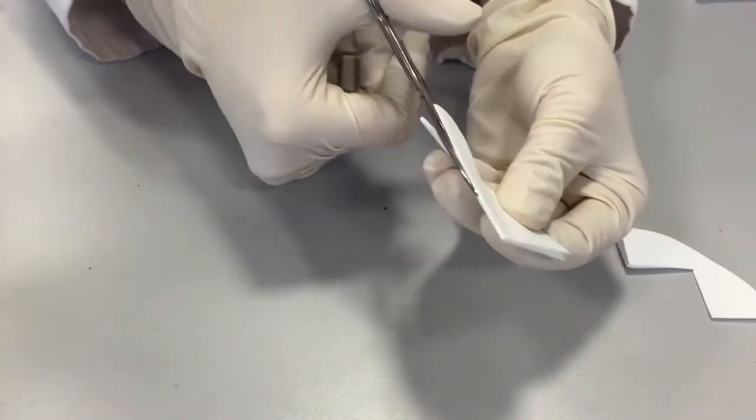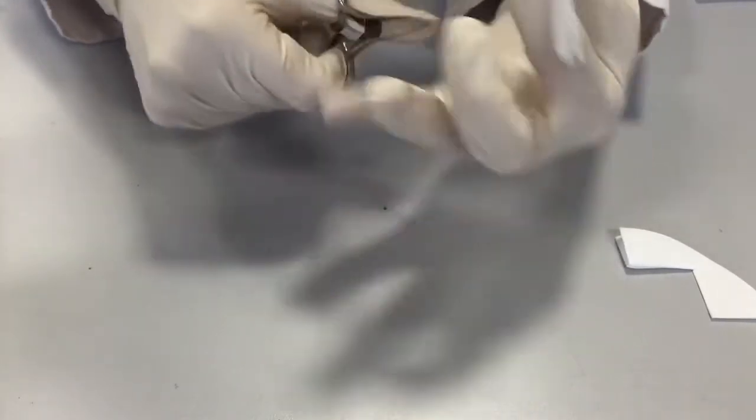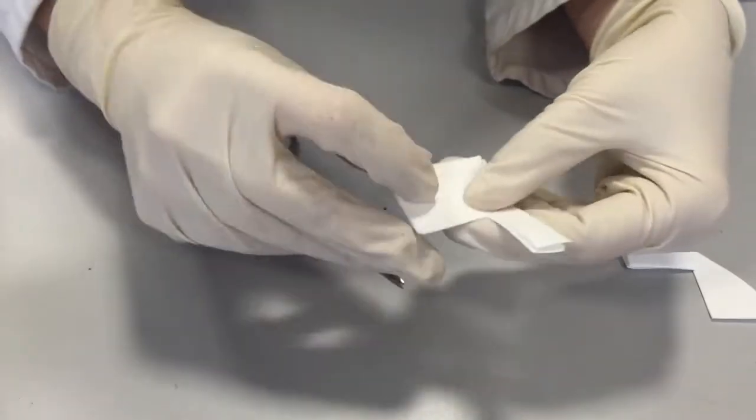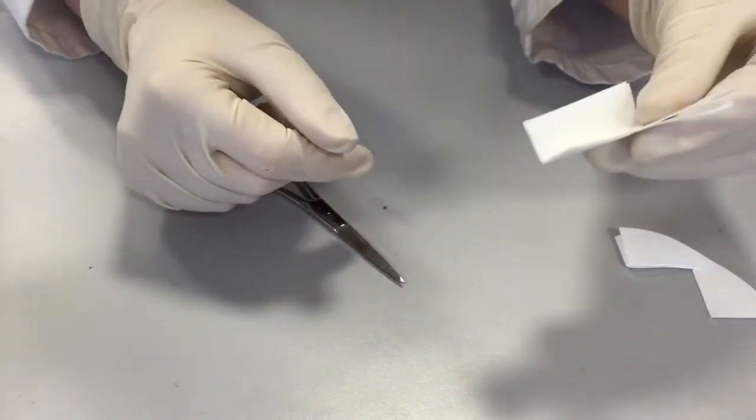You cut along the folds and then fold the filter paper so that you have your paper boat there.